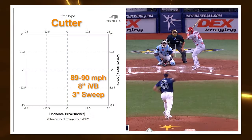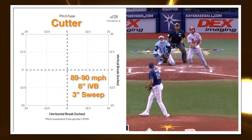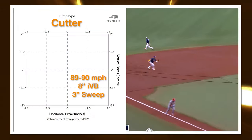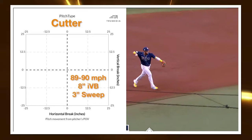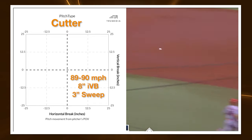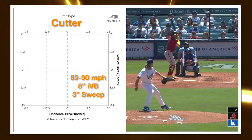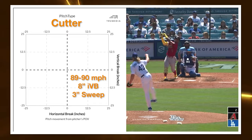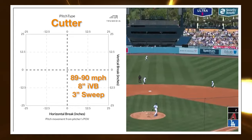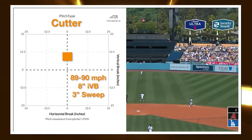The average cutter thrown by a right-handed pitcher in Major League Baseball last season looked something like this. It was 89 to 90 miles per hour, it had 8 inches of induced vertical break, and 3 inches of glove side movement. It sits somewhere here on a pitch plot.